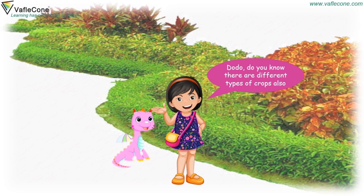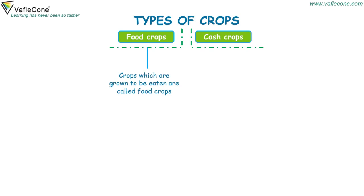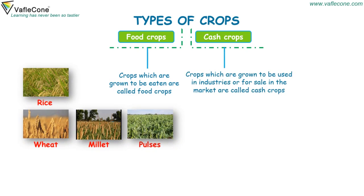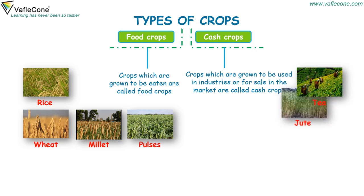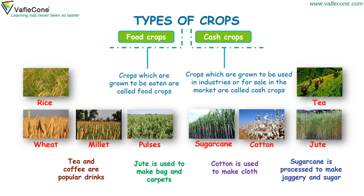Dodo, do you know there are different types of crops also? Let's discuss. Types of crops. There are two types of crops: food crops and cash crops. Crops which are grown to be eaten are called food crops. For example, rice, wheat, millet and pulses. Crops which are grown to be used in industries or for sale in the market are called cash crops. For example, tea, jute, cotton and sugar cane. Tea and coffee are popular drinks. Jute is used to make bags and carpets. Cotton is used to make cloth. Sugar cane is processed to make jaggery and sugar.